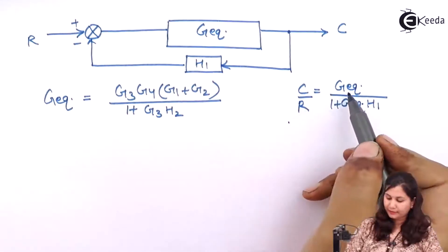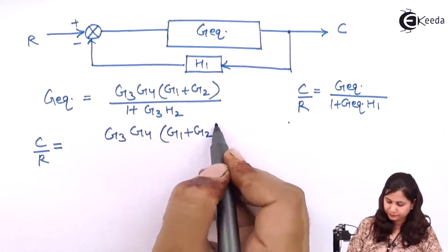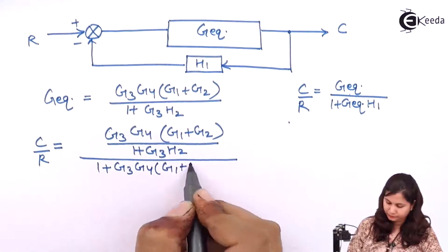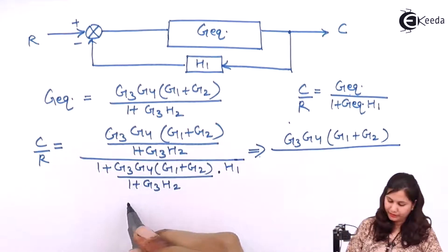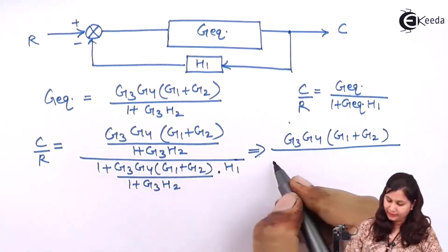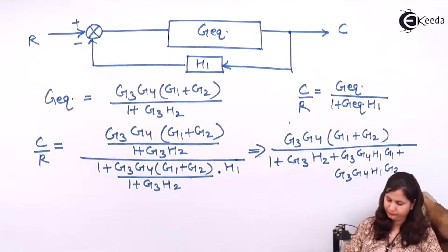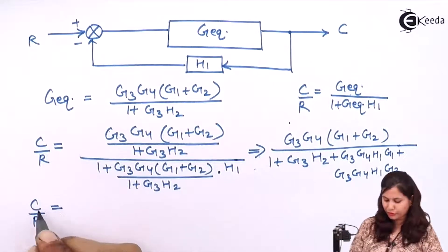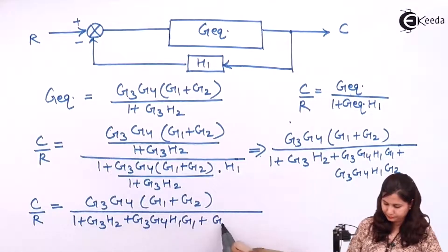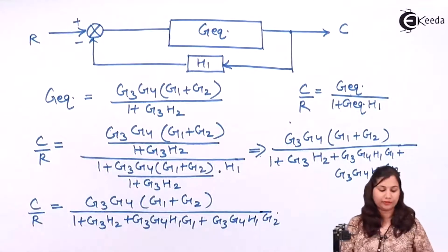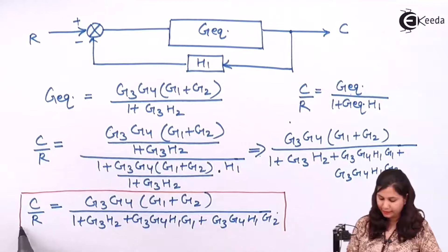So the resultant transfer function — that is the ratio C by R — is given by G equivalent upon 1 plus G equivalent times H1. We can put the value of G equivalent into it. The denominators will cancel out because they are the same. So the first ratio C by R will be obtained. We have found out C by R. Now we have to find out the next ratio, C by E.